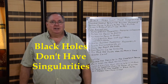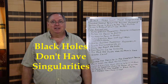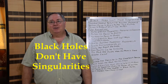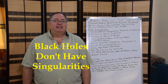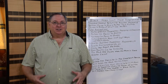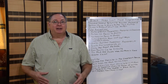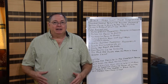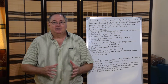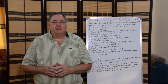Today I wanted to discuss another problem with general relativity theory. Black holes can't have singularities. Under general relativity theory it's assumed that once the black hole forms, all the matter collapses to a point and becomes a singularity.